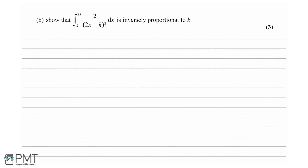Part B is asking us to show that the integral of 2 over (2x minus k) squared with respect to x from k to 2k is inversely proportional to k. When it says inversely proportional to k, it means the final answer will be of the form a over k, where a is a constant. This also means directly proportional to 1 over k.